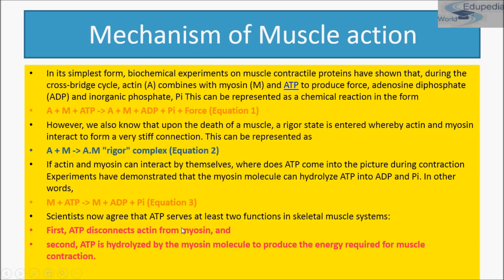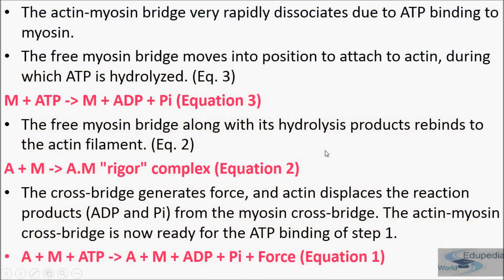Scientists agree that ATP serves at least two functions: first, ATP disconnects actin from myosin; and second, ATP is hydrolyzed by the myosin molecule to produce the energy required for muscle contraction. The actin-myosin bridge very rapidly dissociates due to ATP binding to myosin, and free myosin bridges move into position to attach to actin — during which ATP is hydrolyzed: M + ATP → M + ADP + Pi. The free myosin bridge, with its hydrolyzed products, then rejoins the active filament.